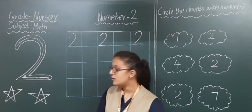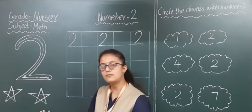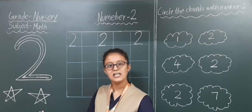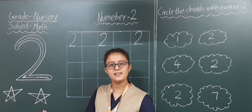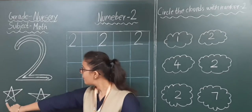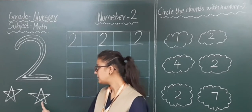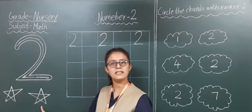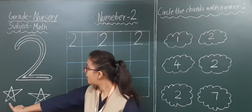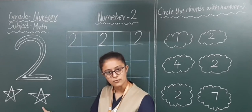So now you can see here there are 2 stars. How many stars? 2 stars. First of all we count the stars: 1, 2. How many stars? 2 stars — 1 and 2.